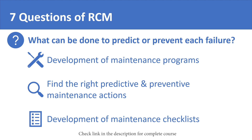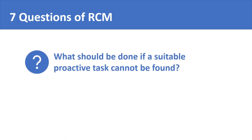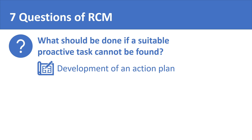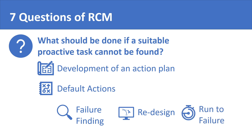The seventh question of RCM is a natural progression from the sixth question. It asks: what should be done if a suitable proactive task cannot be found? — where a proactive task refers to a preventive or predictive maintenance task. It is quite probable that you would not be able to predict or prevent each and every type of failure. Therefore, the RCM process directs you to develop an action plan for such failures as well. In RCM, when a failure can neither be prevented nor be predicted, a default action needs to be selected. There are three types of default actions: failure finding, redesign, and run to failure or RTF.